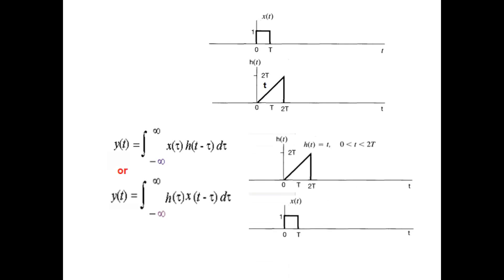So our arrangement will now be like this. This here is Xt. We will flip this and shift this function. So case number 1 or step number 1: change the variable from t to tau. So everything has now been changed from t to tau.